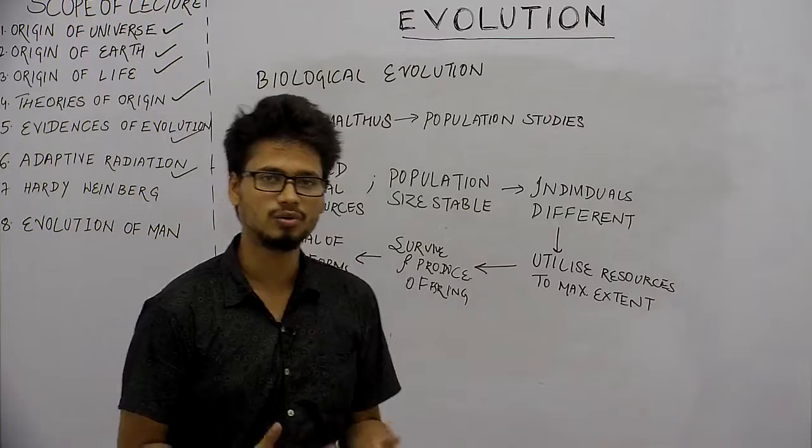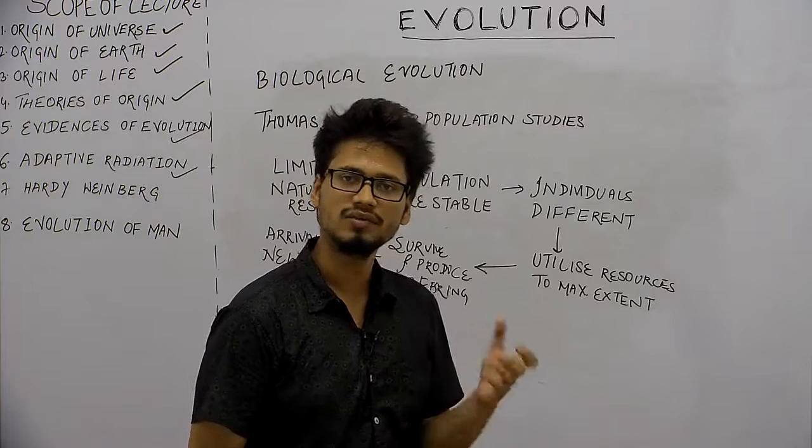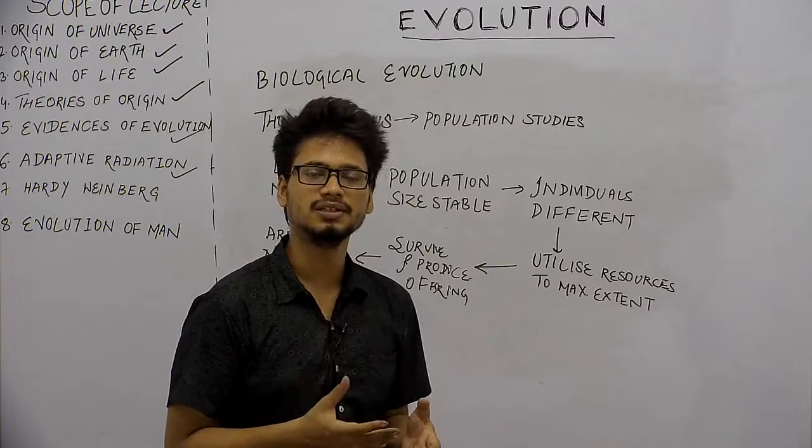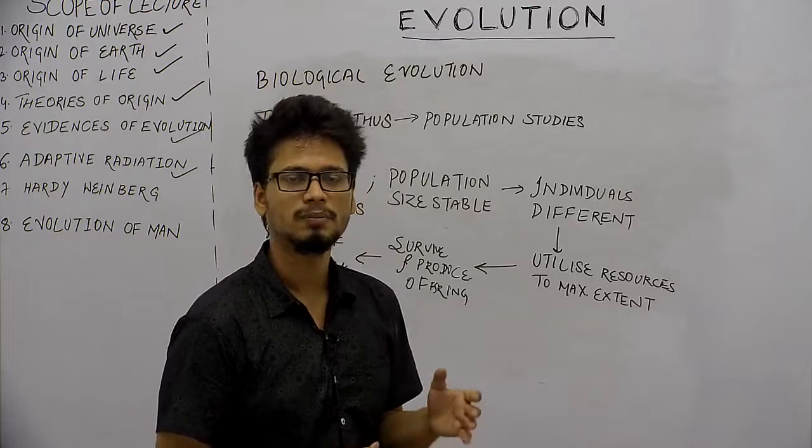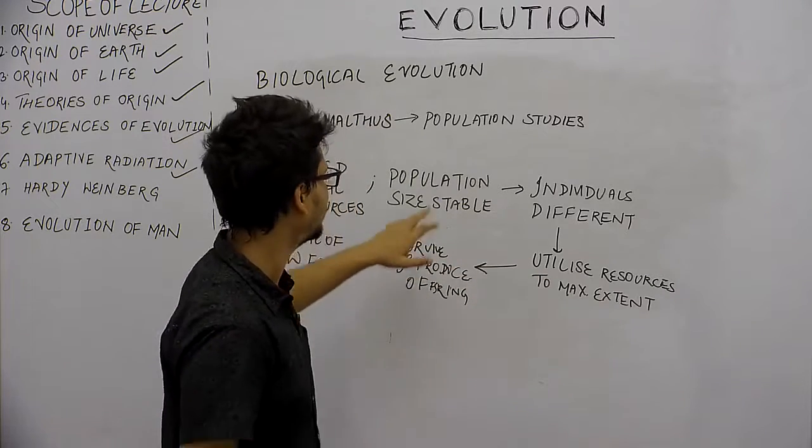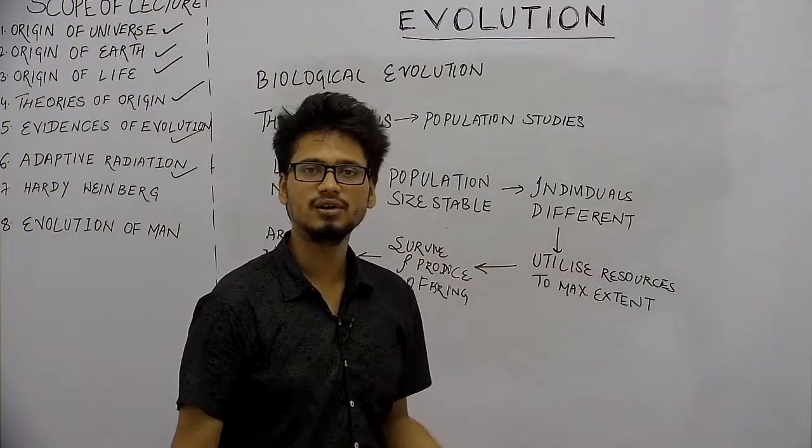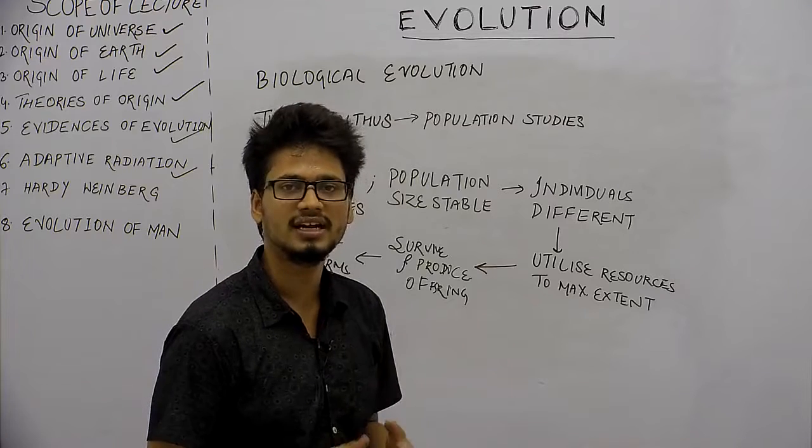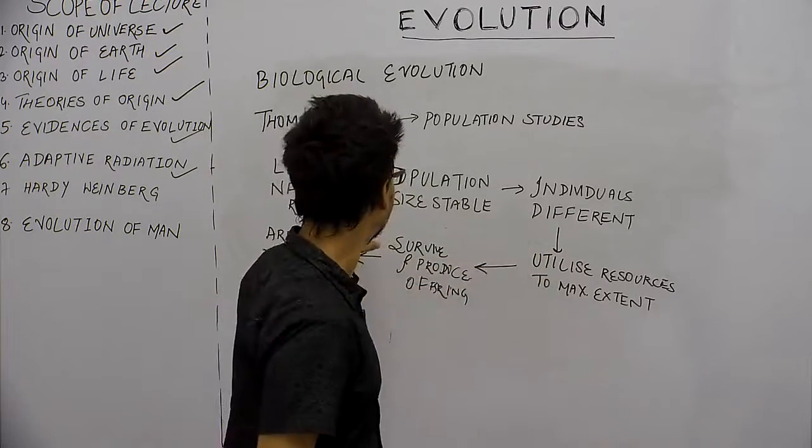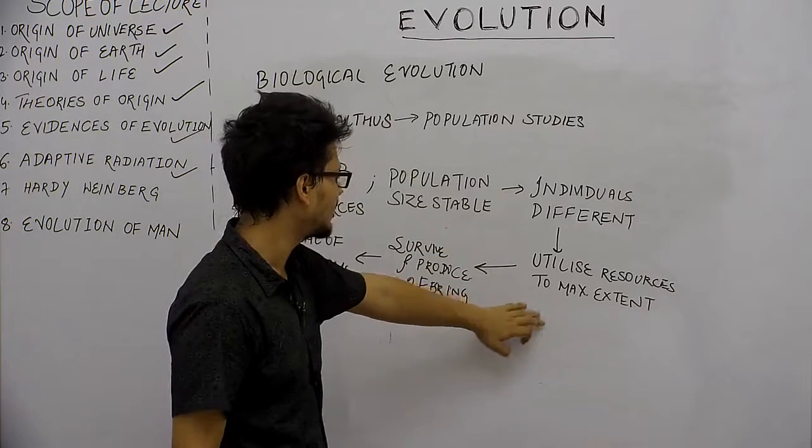In population studies, the resources are always limiting. The population size does not increase exponentially. Theoretically, if every person reproduces at maximum capacity, the population should explode, but fortunately this does not happen in real life. Population size is stable because individuals are different in genetic variability. Some individuals who can use these limited natural resources properly and to maximum use survive.